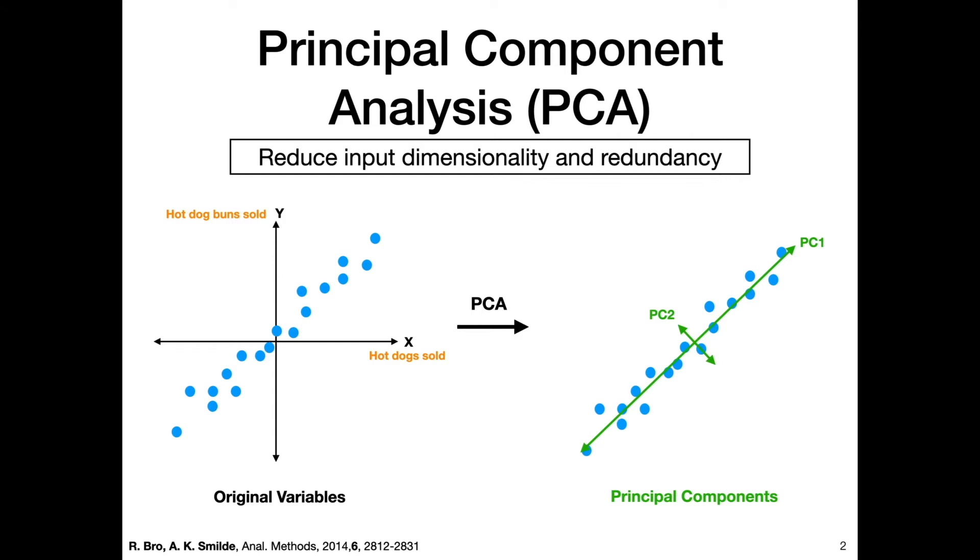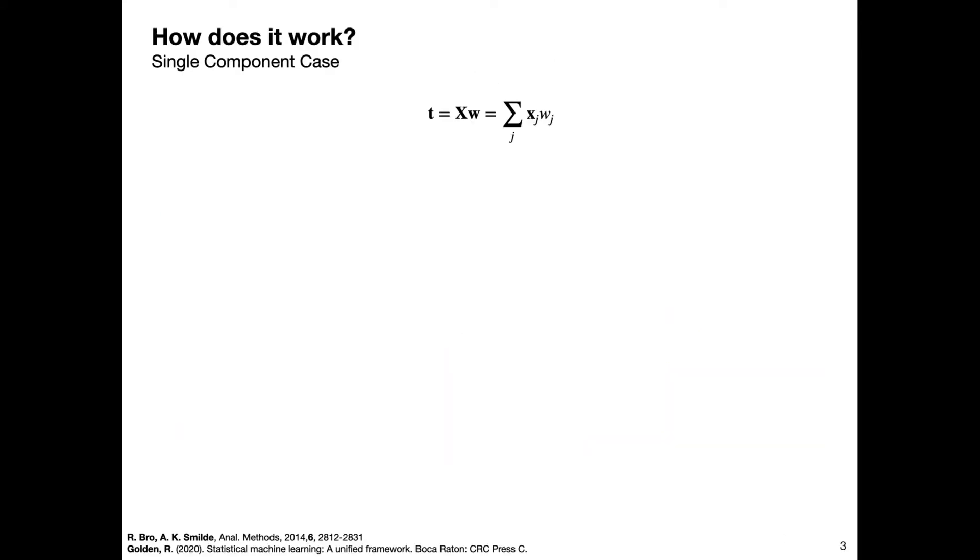Essentially, we've reduced the dimensionality from two variables x and y to just one, PC1, if we choose to drop PC2. So how does it work? The basic idea is to reduce variable redundancy by creating a new set of variables where the variance along each subsequent variable is maximized.